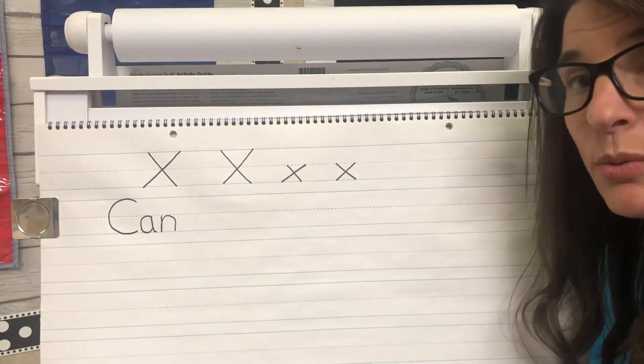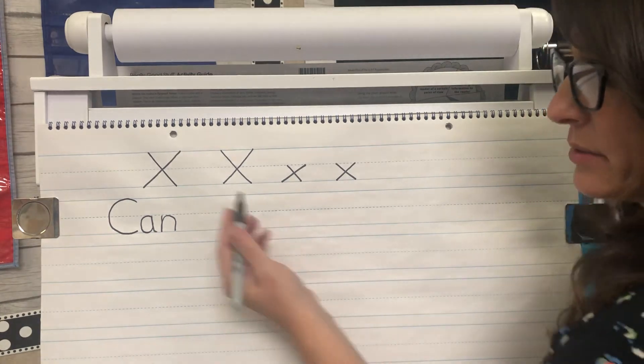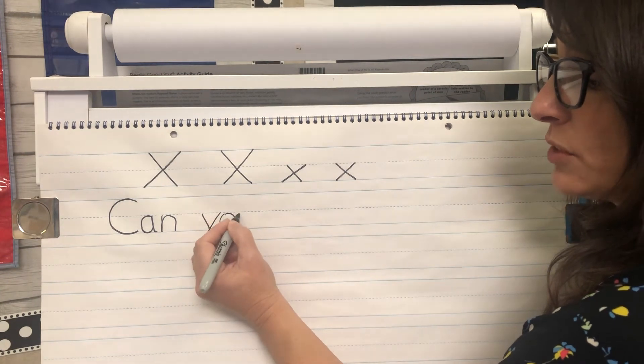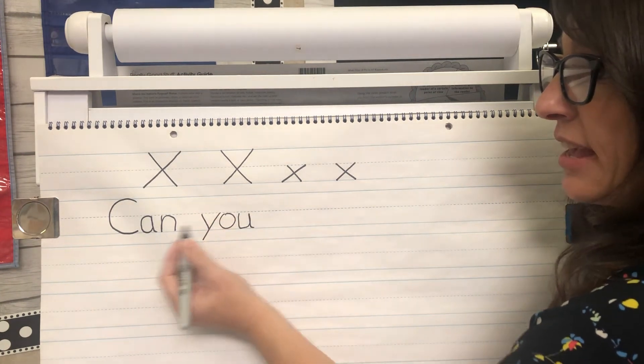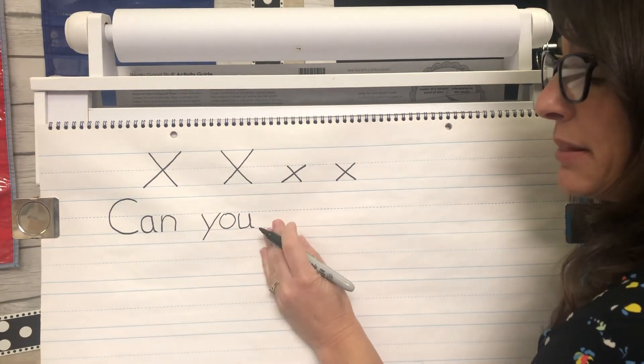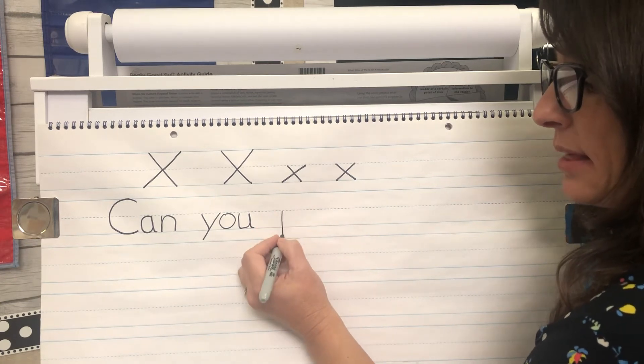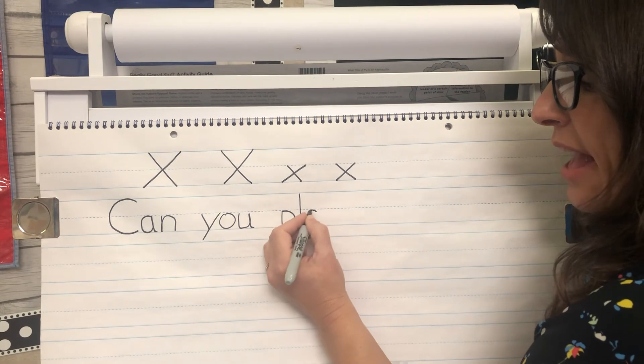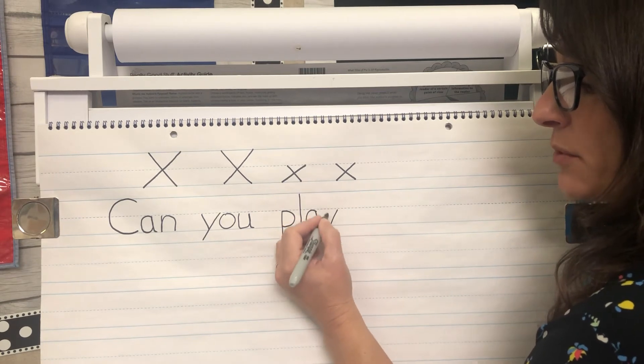You. Now that's been a sight word, but it's been a while since we've had it. U is spelled like this. It's a Y O U. Can you, make a space, play. Now that's our word. P P L A.